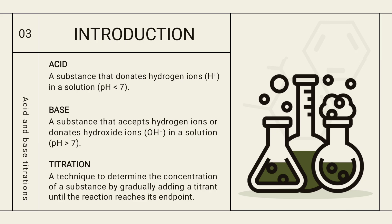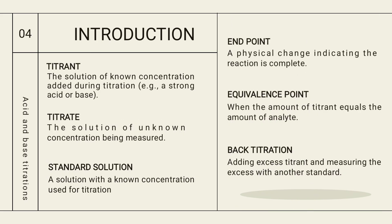Titration is a technique used to determine the concentration of a substance by adding a titrant until the reaction reaches its endpoint. For example, we neutralize an acid with a base until the endpoint is reached. We take a titrate and add titrant to it, and when we observe a color change or any visible change, we know the endpoint has been reached and the acid has been neutralized by the base.